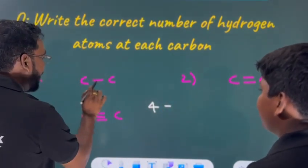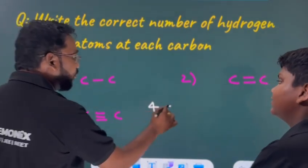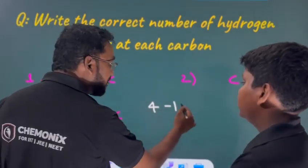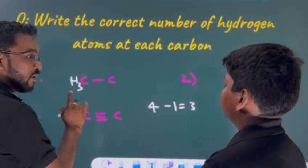Tell me, at this carbon how many bonds are there? One bond sir. So, 4 minus 1? 3. That is all right, the 3 hydrogens. Do you understand?